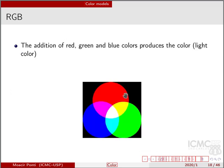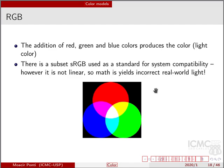However, this is the system that we use and we can use them effectively to represent many colors. The RGB is the addition of red, green and blue producing color. This is a light color. As I said, there is a subset sRGB used for system compatibility.